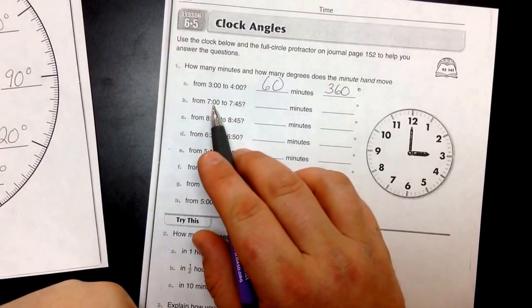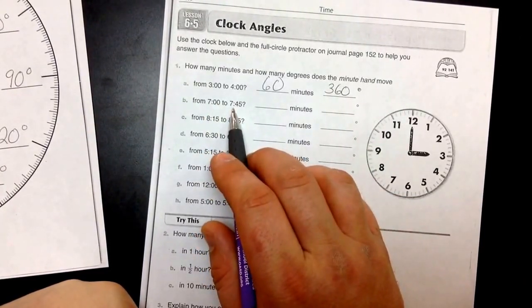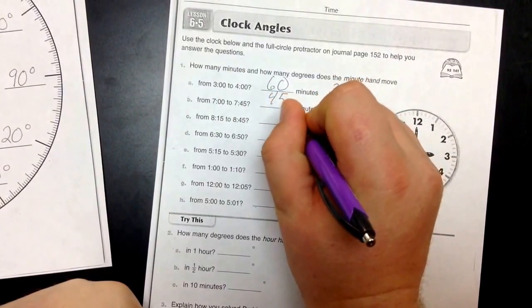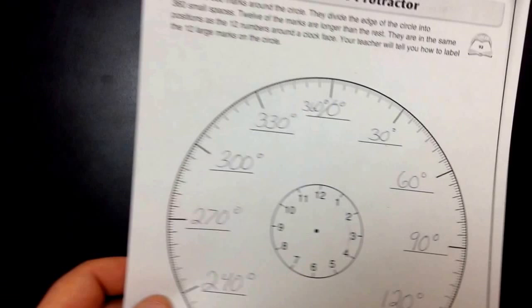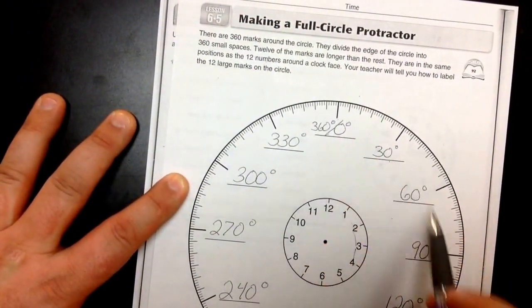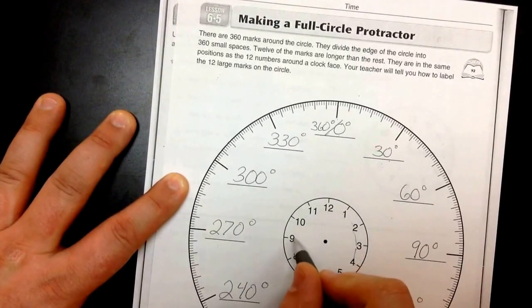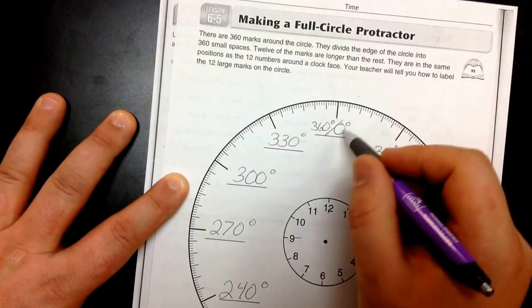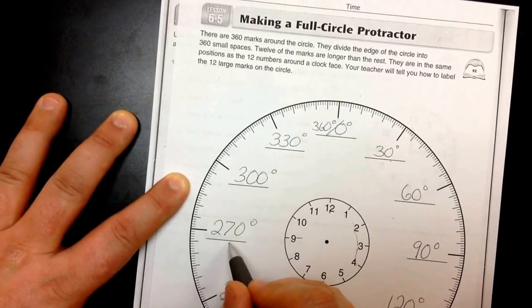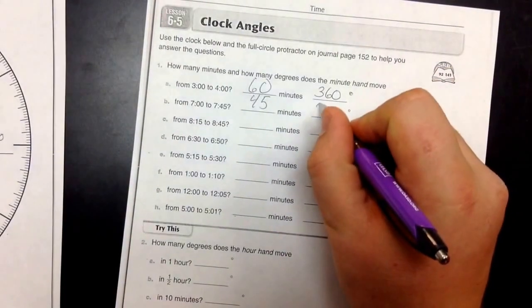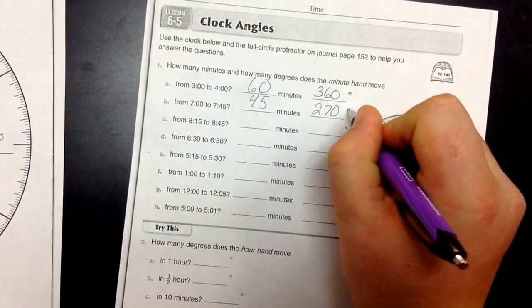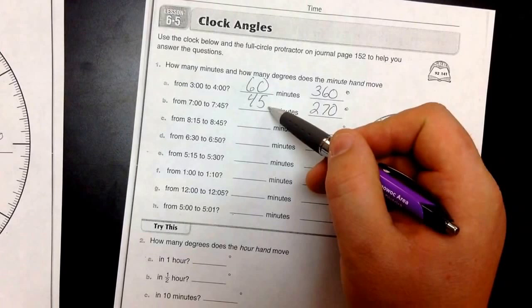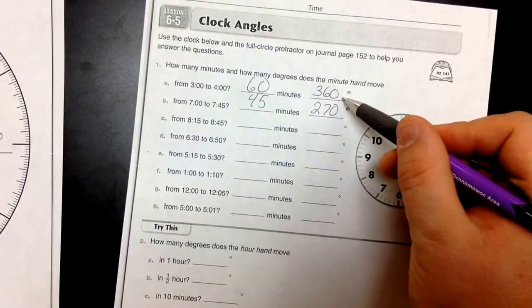The next question is going from seven o'clock to seven 45. So how many minutes is that? It's 45 minutes, and 45 minutes on a clock, starting at our zero. 45 minutes on a clock goes to the nine. That's our 45. So we're going from 12 to nine on our clock. We're going from zero to 270 on our full circle protractor. So that is 270 degrees. Now it makes sense that as we got less minutes, we got less degrees. 45 is less than 60. 270 is less than 360.